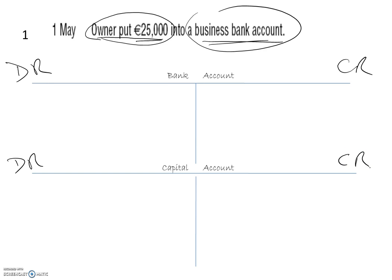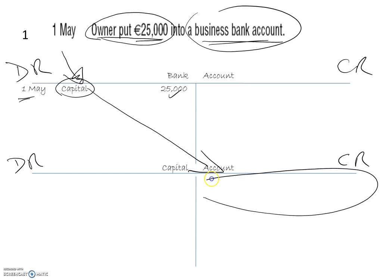Money going into a bank is always on the debit side. So we write in on the debit side of the bank account: date 1st of May, where the money came from — capital — and the amount 25,000. Then we double-enter that into the capital account on the credit side: 1st of May, bank, 25,000.